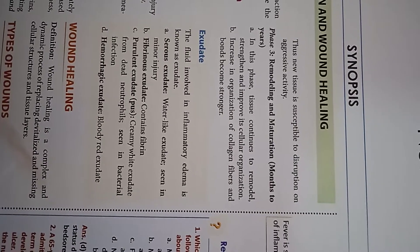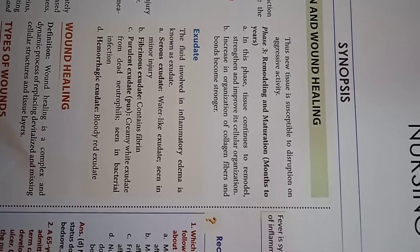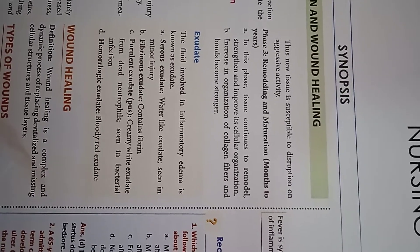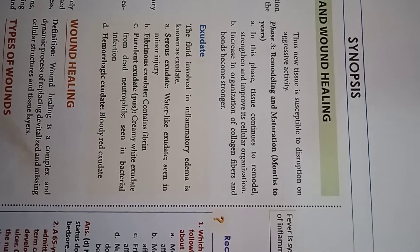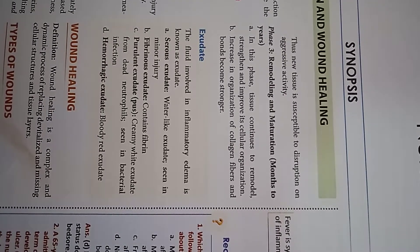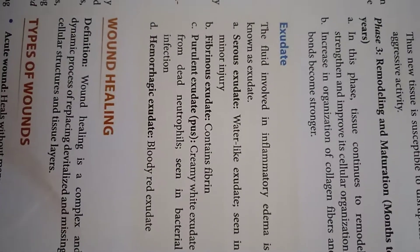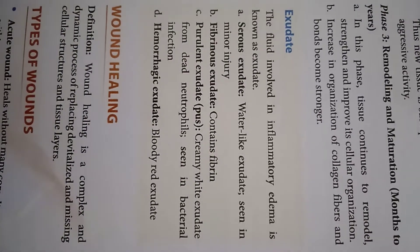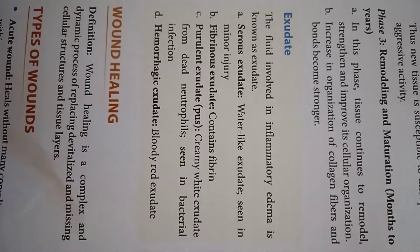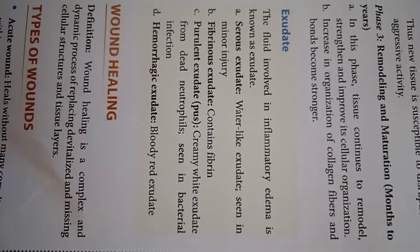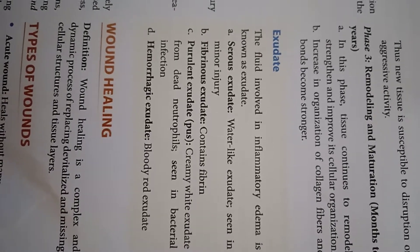The fluid involved in inflammatory edema is known as exudate. Exudate can be of 4 types: serous exudate, fibrinous exudate, purulent exudate, and hemorrhagic exudate. Serous exudate is a water-like exudate seen in minor injury. Fibrinous exudate contains fibrin. Purulent exudate is a creamy white exudate formed from dead neutrophils, seen in bacterial infection. Hemorrhagic exudate is a bleeding red exudate.